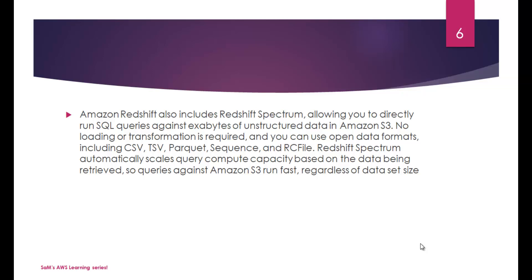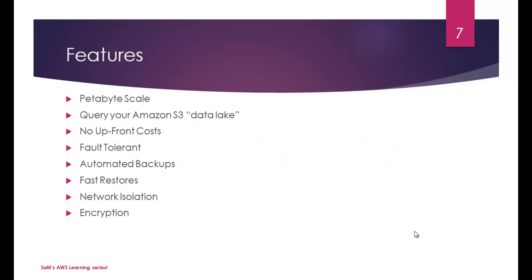Amazon Redshift also includes Redshift Spectrum, a feature that lets you directly run SQL queries against exabytes of unstructured data in Amazon S3 — no loading or transformation required. It supports open data formats including CSV, TSV, Parquet, Sequence, and RC file. Redshift Spectrum automatically scales query compute capacity based on the data being retrieved, so queries against S3 run fast regardless of data set size.